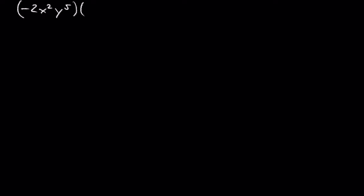Let's start with negative 2x squared times y to the fifth, and multiply this by 3x times y to the negative fourth. Because the order of operations in multiplication doesn't matter, we can remove the parentheses and combine like terms.